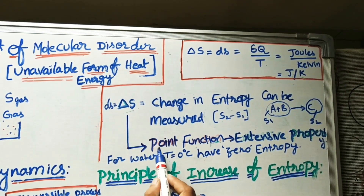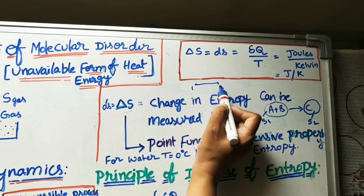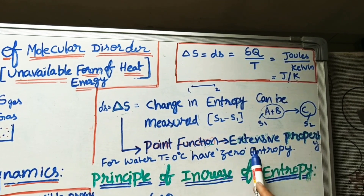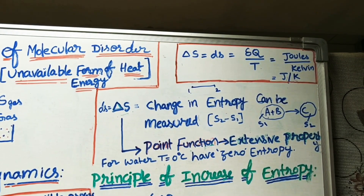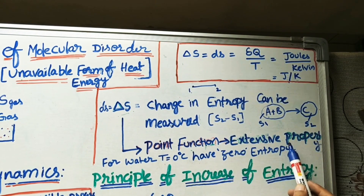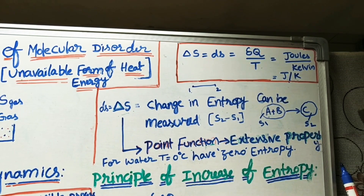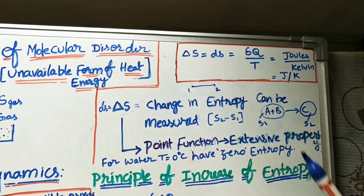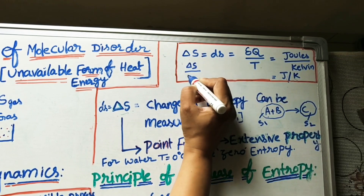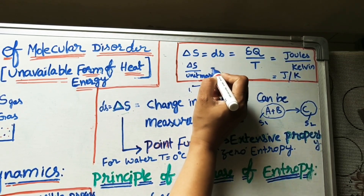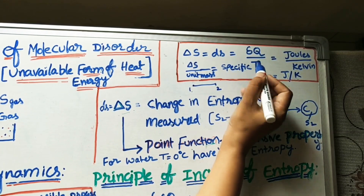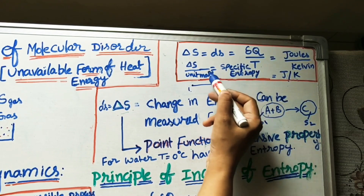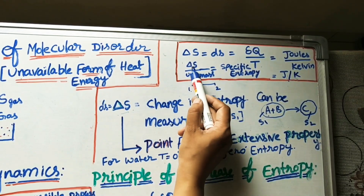Change in entropy is a point function — from one point to another, the difference S2 minus S1 gives an exact value, so it is also called a state function. It is an extensive property, meaning it depends on the mass of the system. If we take entropy per unit mass, we call it specific entropy — just as volume per unit mass is called specific volume.